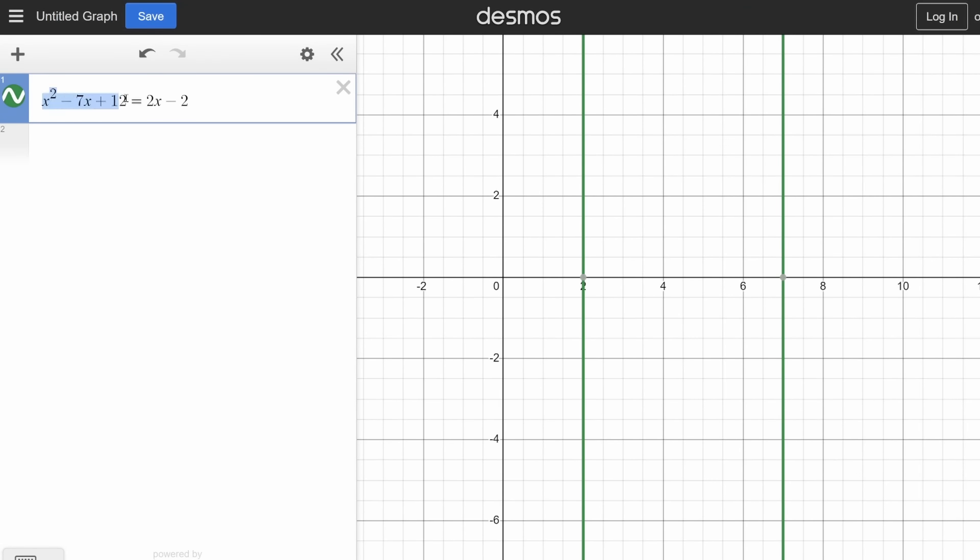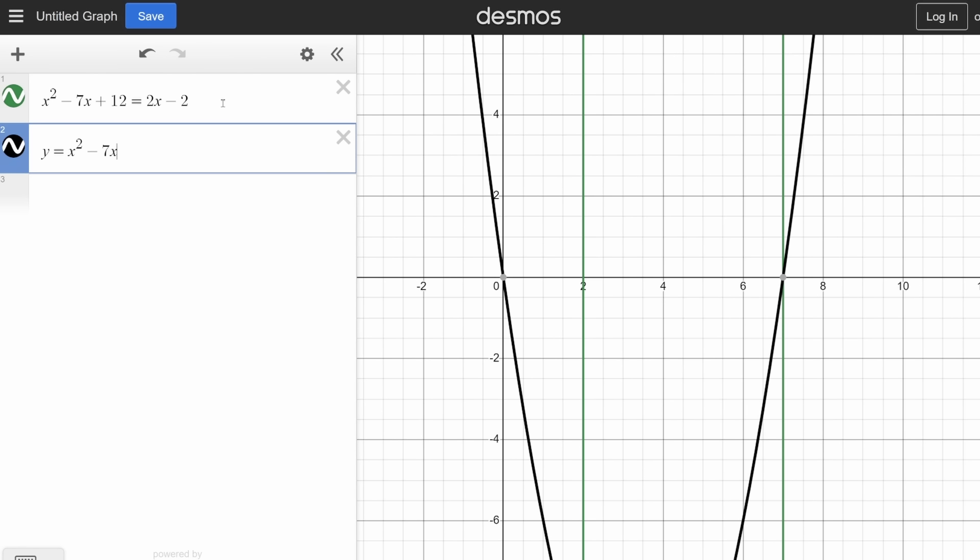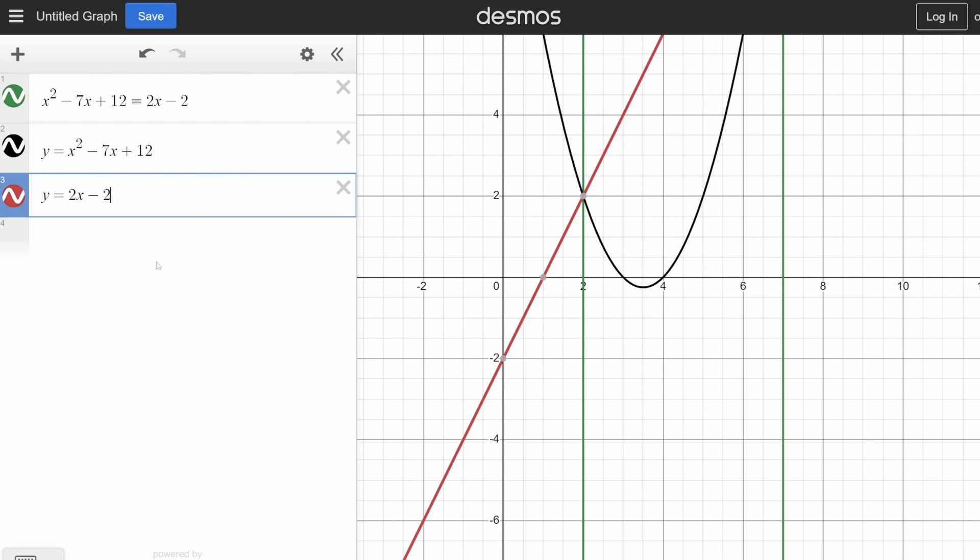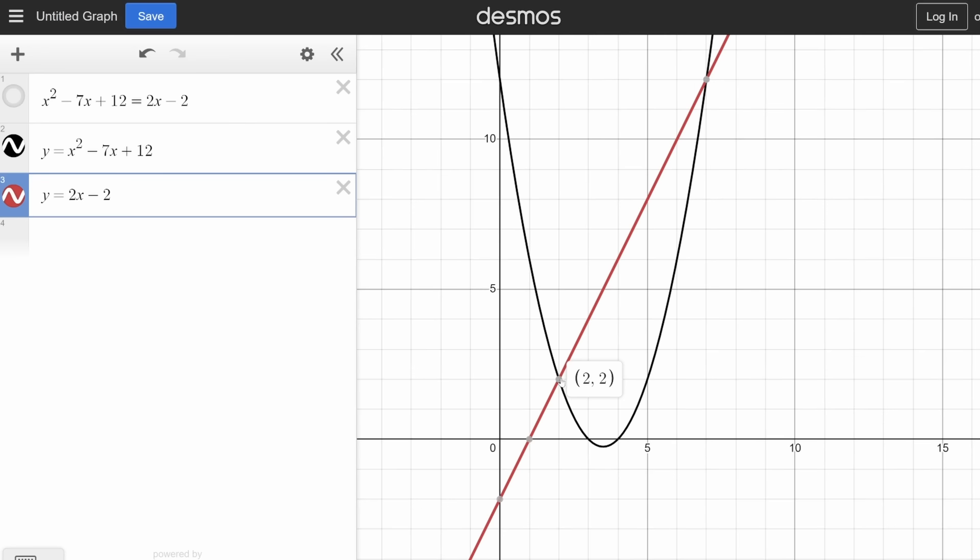You may realize that every single variable equation can be rewritten as a system of equations, and vice versa. For example, let's say we have this single variable equation right here, with solutions 2 and 7. If we wanted to express this as a system, you can set y equal to the left side of the equation, and y equal to the right side of the equation. Notice that the quadratic and the line intersect at x equals 2 and x equals 7, which were our two solutions.